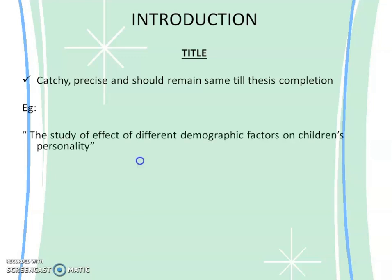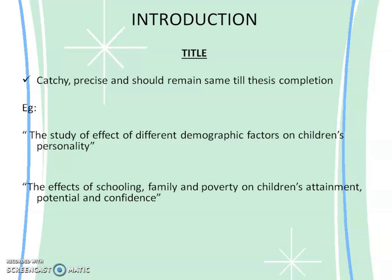Here is an example. The first title is: 'The study of effect of different demographic factors on children's personality.' The second is: 'The effects of schooling, family, and poverty on children's attainment, potential, and confidence.' When you compare these two titles, you can see a great difference. In the first title, the demographic factors are not clearly defined, and children's personality is not clearly defined either, making it difficult for the Research Degree Committee to understand what personality dimensions you are going to measure. In the second title, the effects of schooling, family, and poverty — which are demographic factors — on children's attainment, potential, and confidence — which are dimensions of personality — are clearly specified.